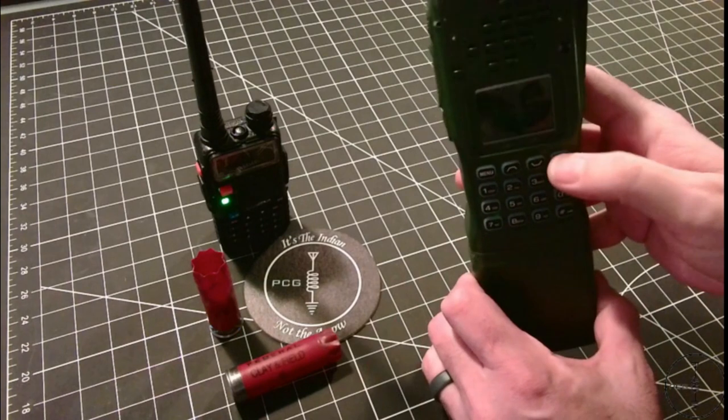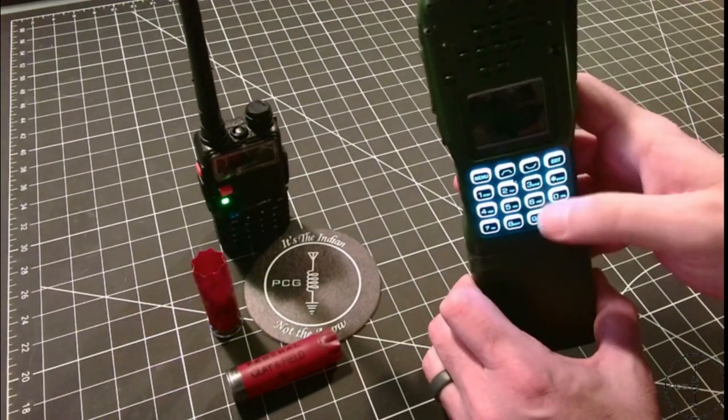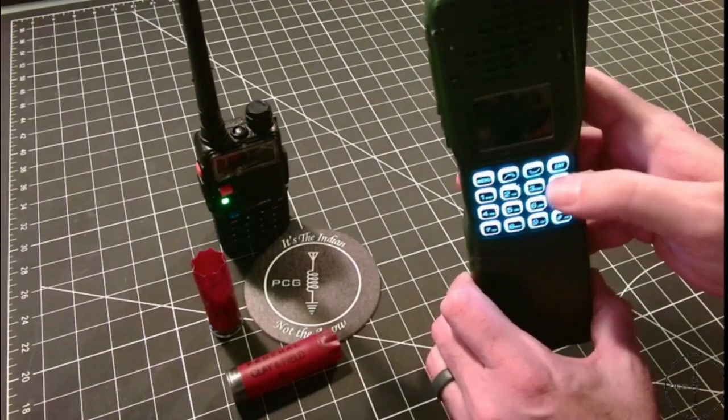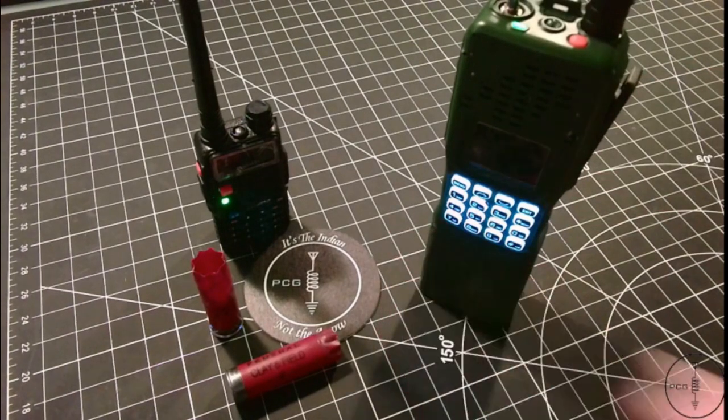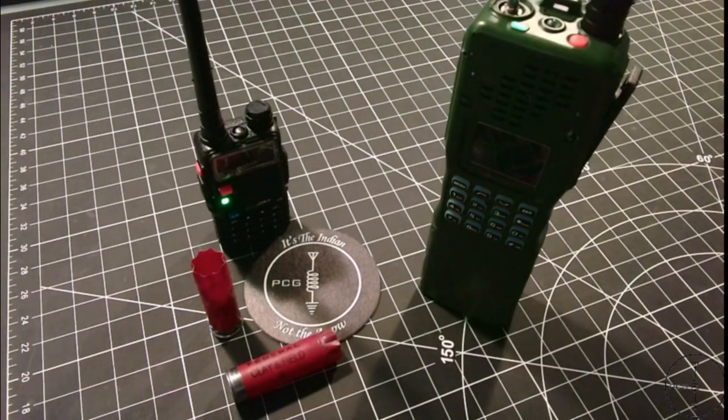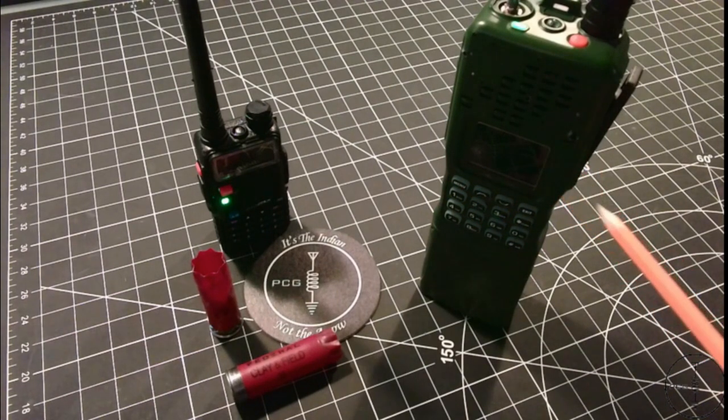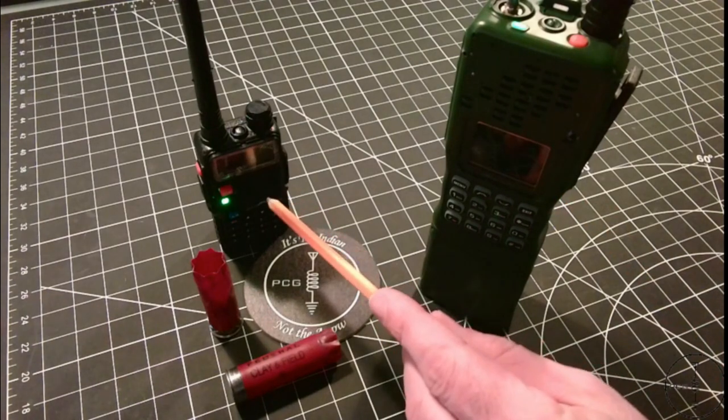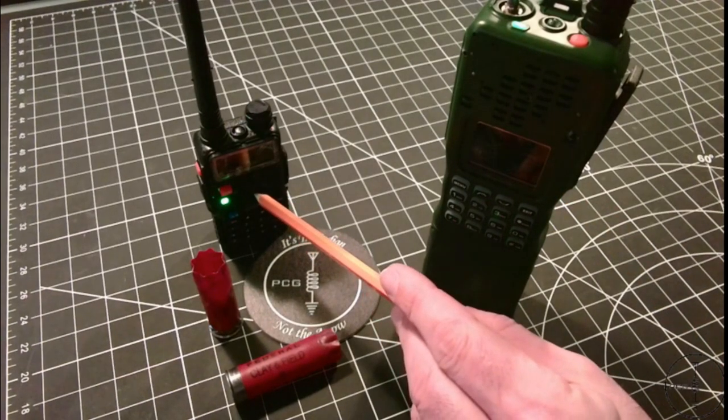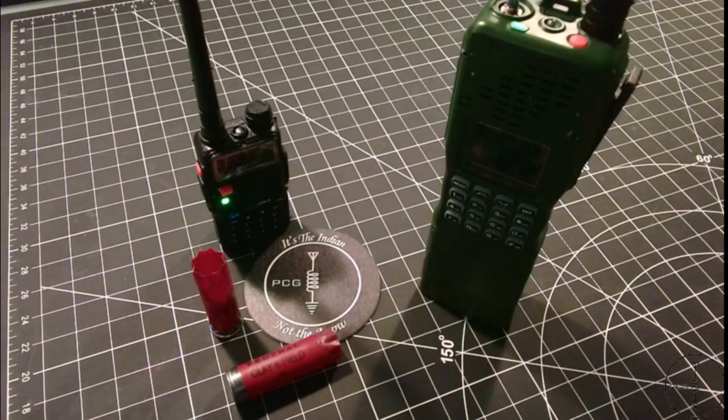It does appear that the number 8 shot penetrated the plastic case. When I shake the radio, I can hear the pellets rattling around in it. That was not the situation with the UV-5R. It doesn't appear that the pellets penetrated that radio.